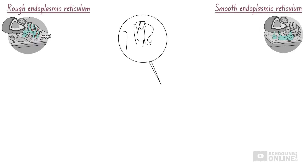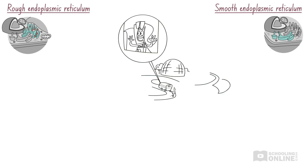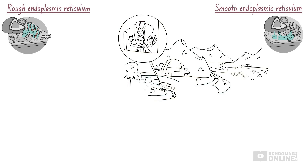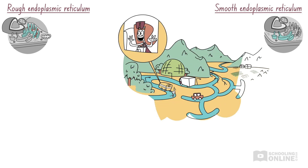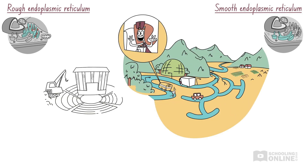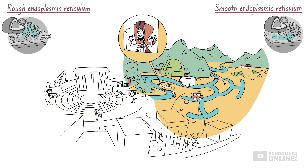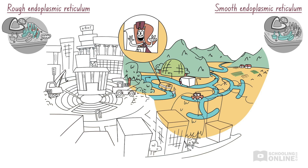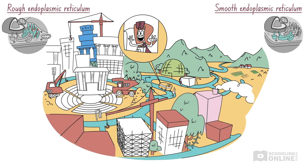In the meantime, Sally has been looking out the bus window. Some streets are crowded with construction companies building new houses and factories, while other streets are totally empty. The tour guide explains that lots of new buildings are being made, but only in some areas of the city. The streets lined with construction companies are just like the rough endoplasmic reticulum, which is covered with ribosomes. These construction companies build new houses, similar to how ribosomes build proteins. Meanwhile, the empty streets are like the smooth endoplasmic reticulum, which lacks ribosomes.